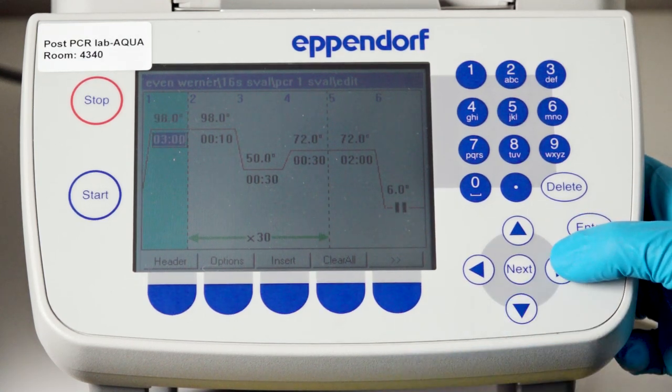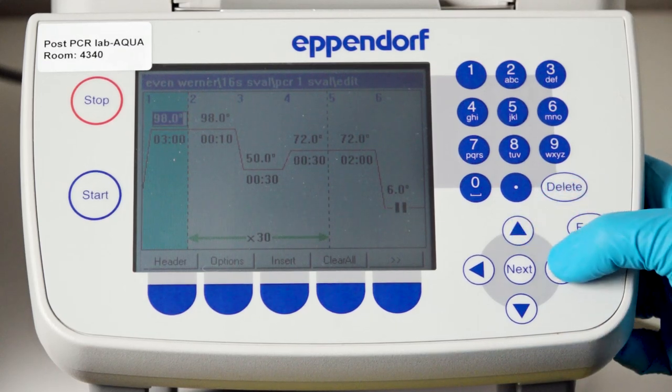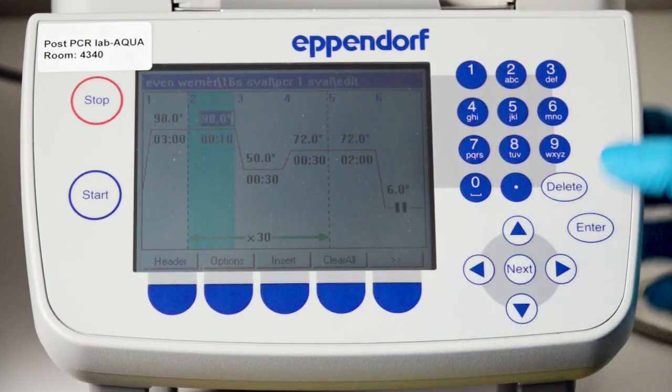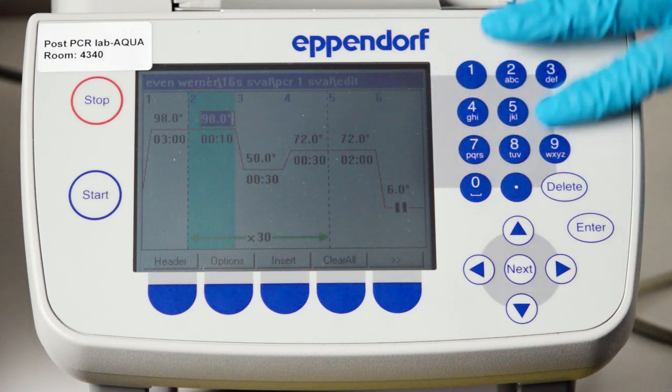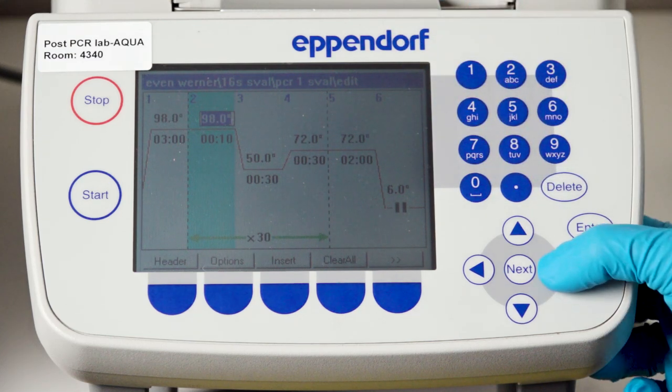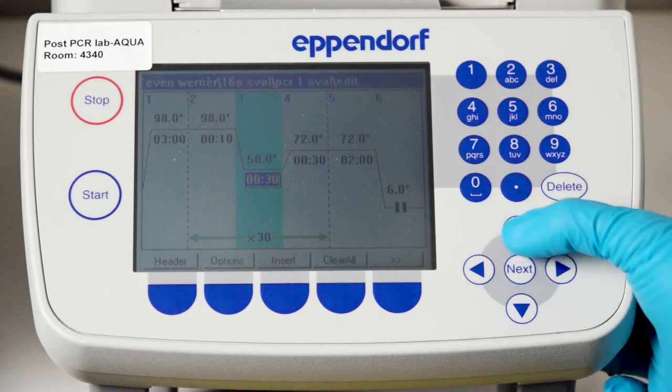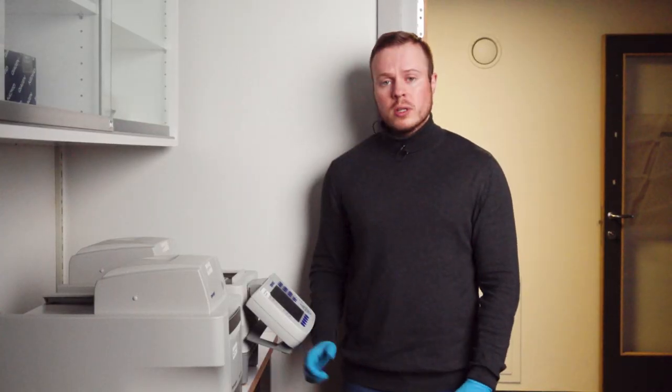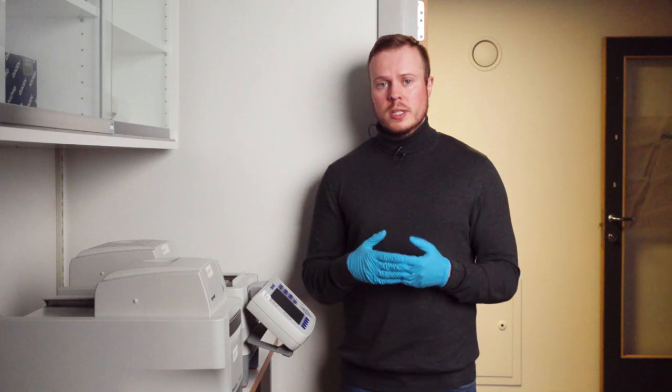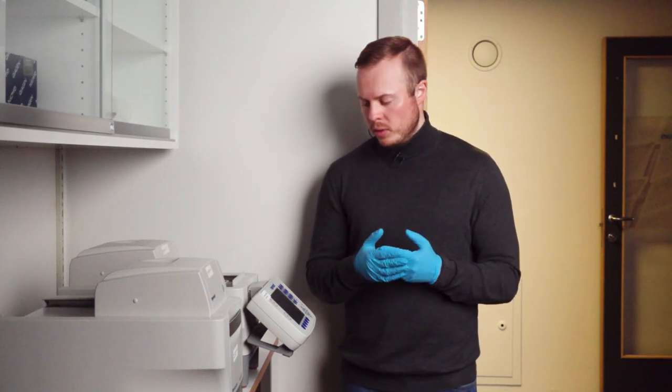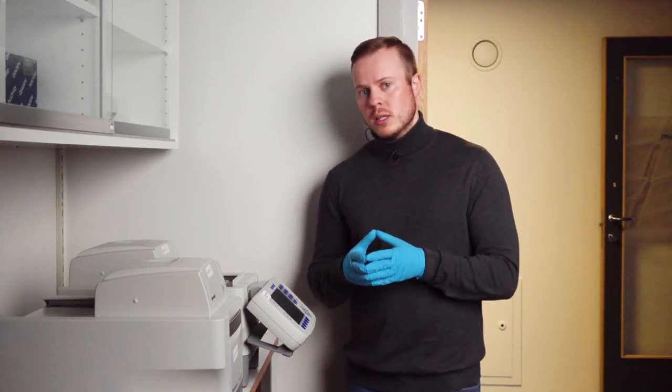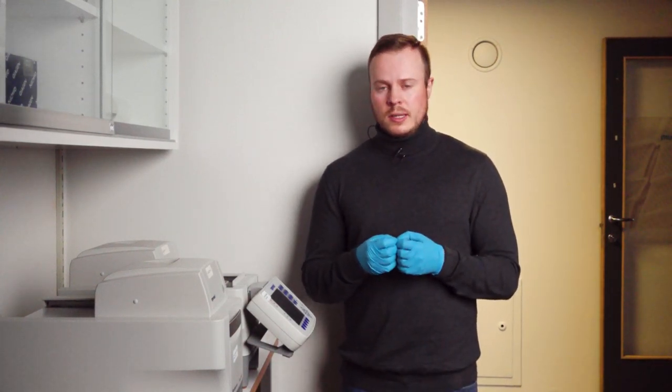Here you have the temperatures and the time, and you can just move between it with the keypad or with the arrows. You can then modify it with all the numbers here. You need to read up on your primers, but you also need to take into account how much DNA you probably have in your samples, because this is very important when it comes to the amount of cycles.